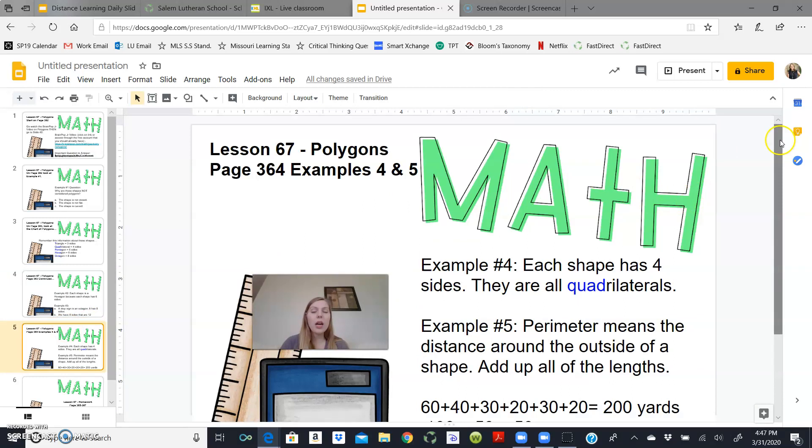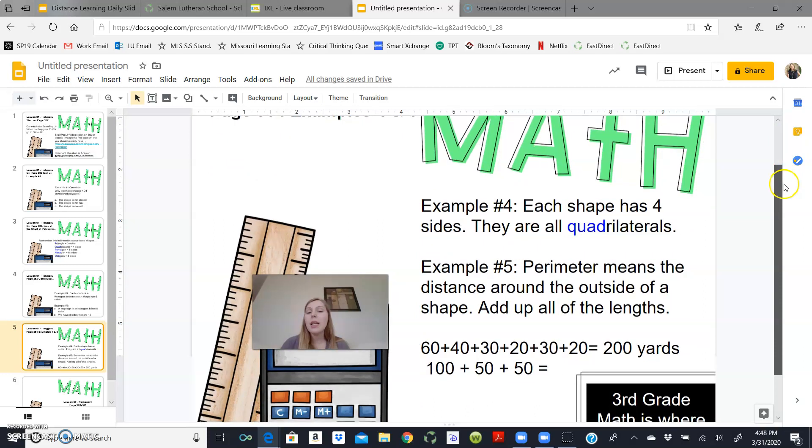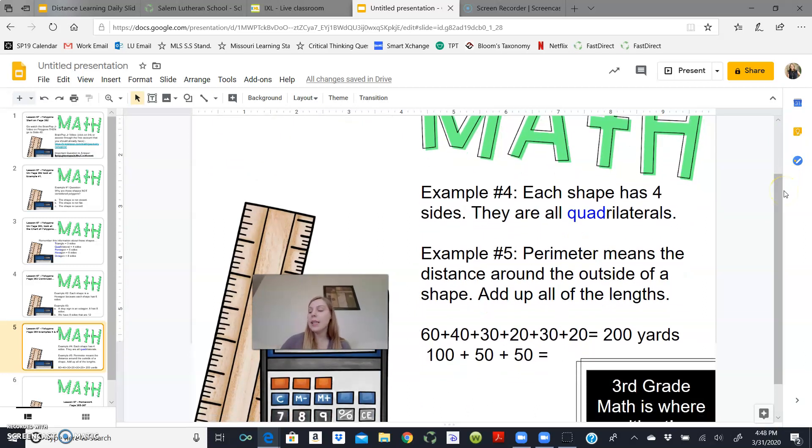For examples 4 and 5, I am on page 364. Now example 4 is asking us to determine what polygon these four shapes are. So by looking at example number 4, you need to count each shape's sides. So all four of those shapes have four sides each and a shape that has four sides is called a quadrilateral. We've already solved example 4. Great job.